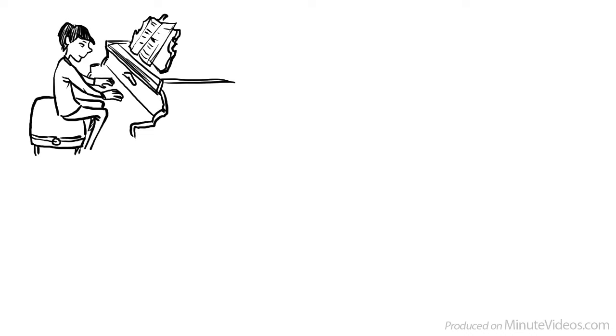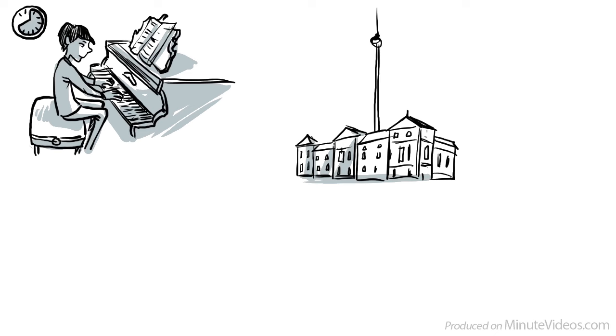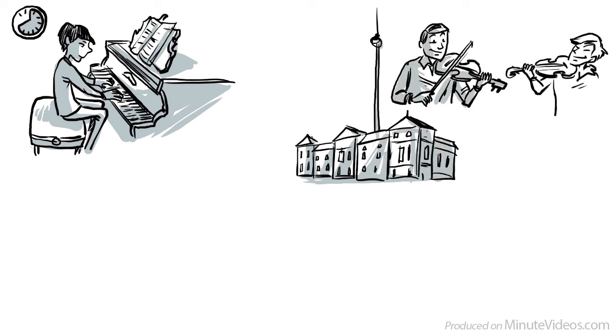Top performers usually start early. As a kid, pianist Lang Lang played around 8 hours every day. The Academy of Music in Berlin knows that at the age of 20, their top violin students have practiced around 10,000 hours each.